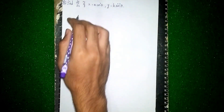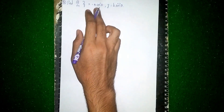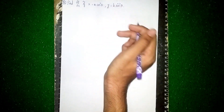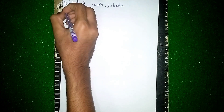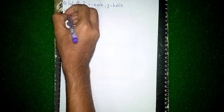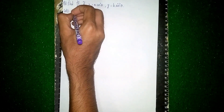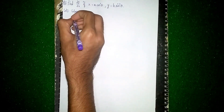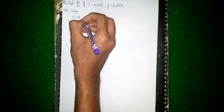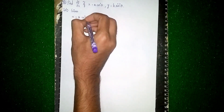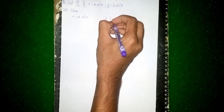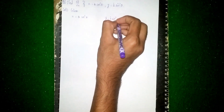Hello and welcome back to my channel. Find dy/dx if x is equal to a·cos³θ and y is equal to b·sin³θ. This is a differentiation question. Let's write the solution — given: x = a·cos³θ and y = b·sin³θ.